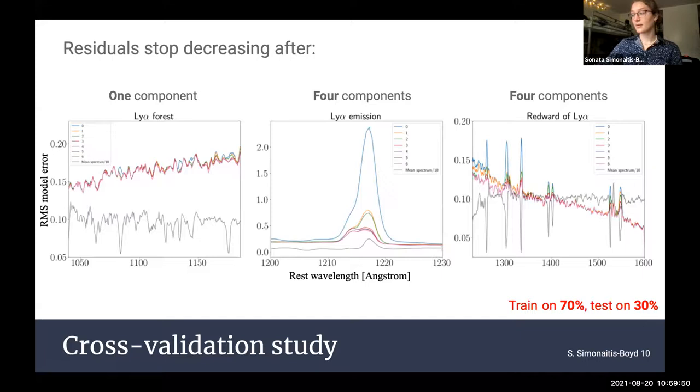So, now that we know how many components we want to model the spectrum redward of Lyman-alpha from which the forest will be predicted, we can make our model.